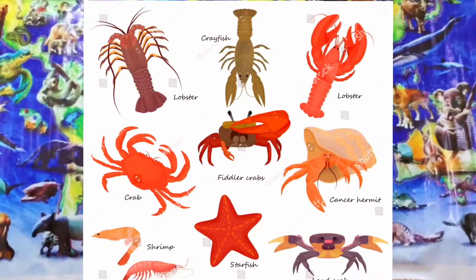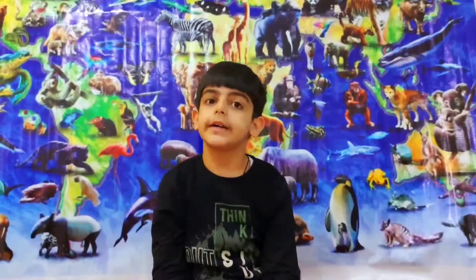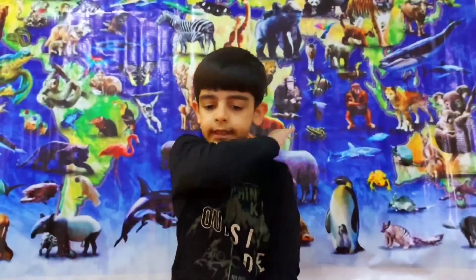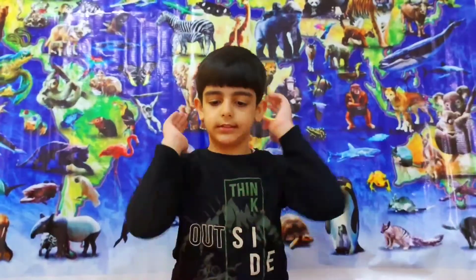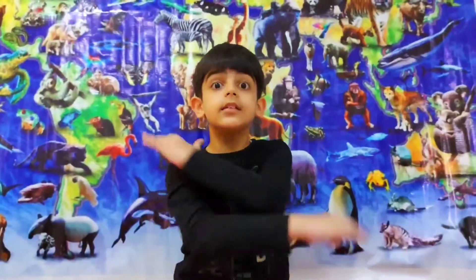And crustaceans — what are crustaceans? They include slaters, which are like the pill bugs or roly-polies you might have seen as a kid, prawns, which are like shrimp, crabs, and lobsters. These are all crustaceans.